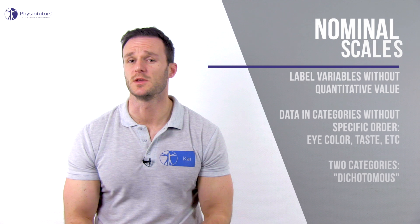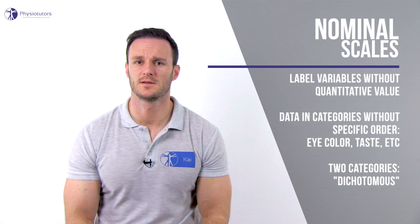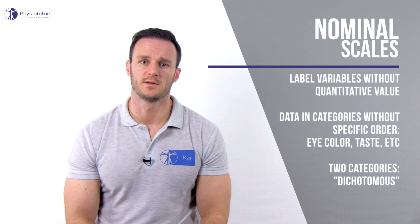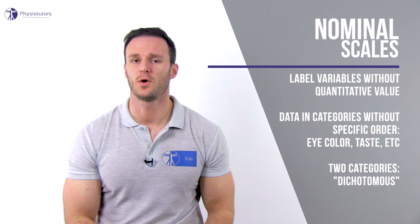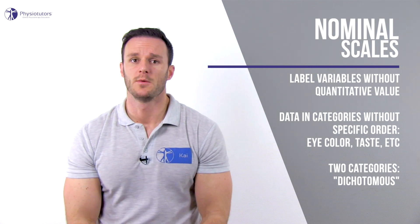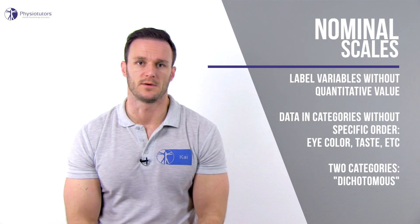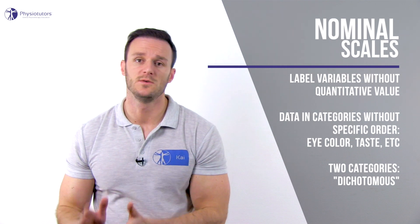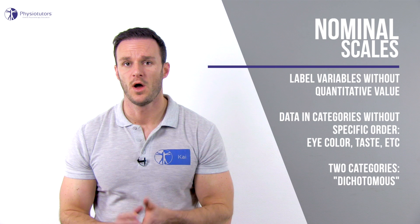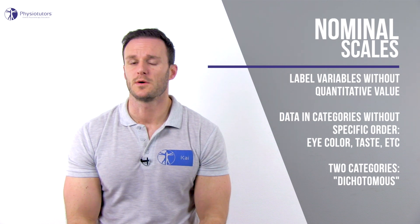Nominal scales can be used for labeling variables without any quantitative value. The data is divided into categories without an order — for example, eye color, which can be divided into blue, green, or brown. If the data can only be divided into two categories, like yes and no, or men and women for gender, then we are talking about a dichotomous variable.